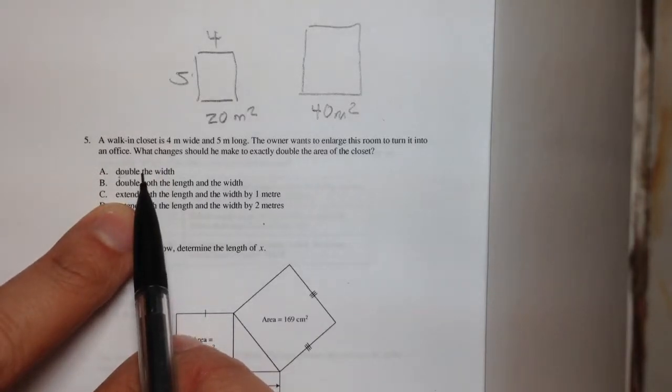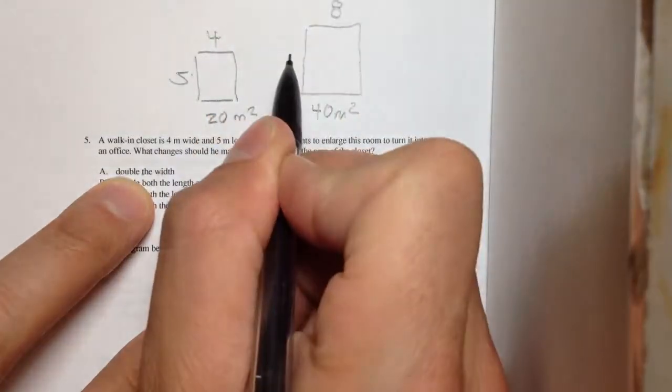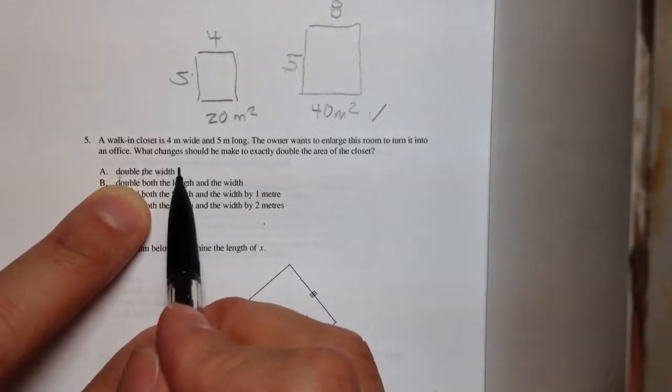Double the width. Okay, so double the width. Well, if the width is 8, but we keep this the same, 5 times 8 is 40 meters squared, so that works.